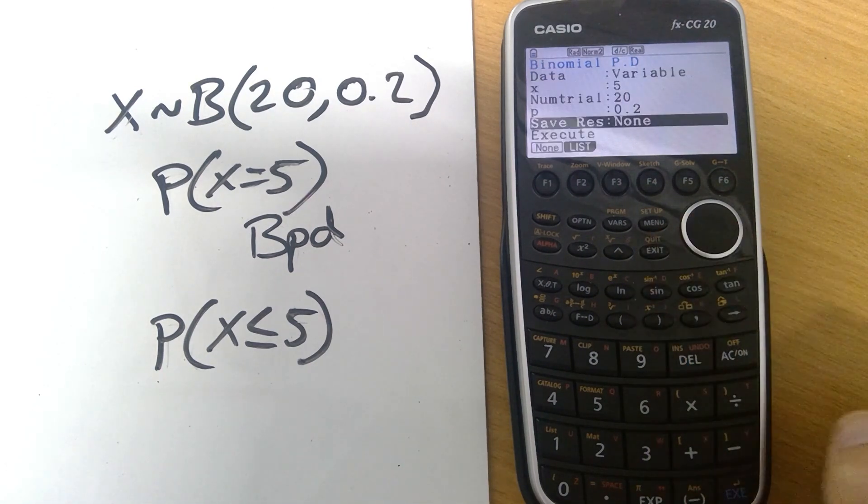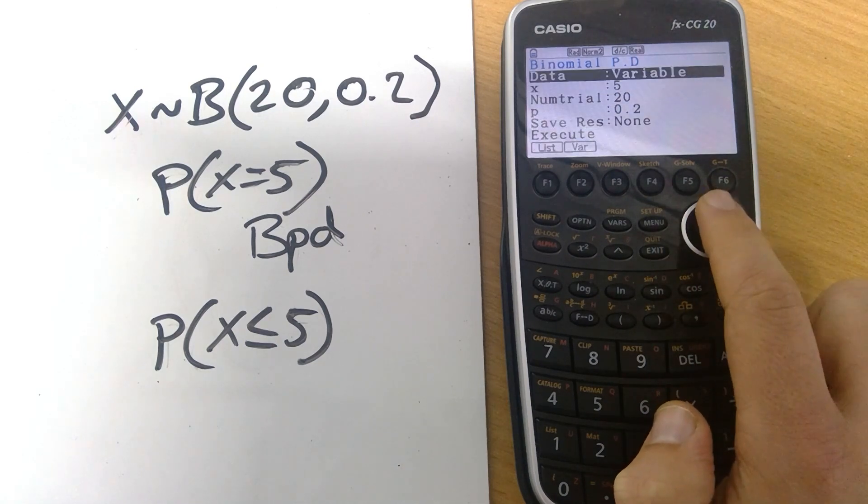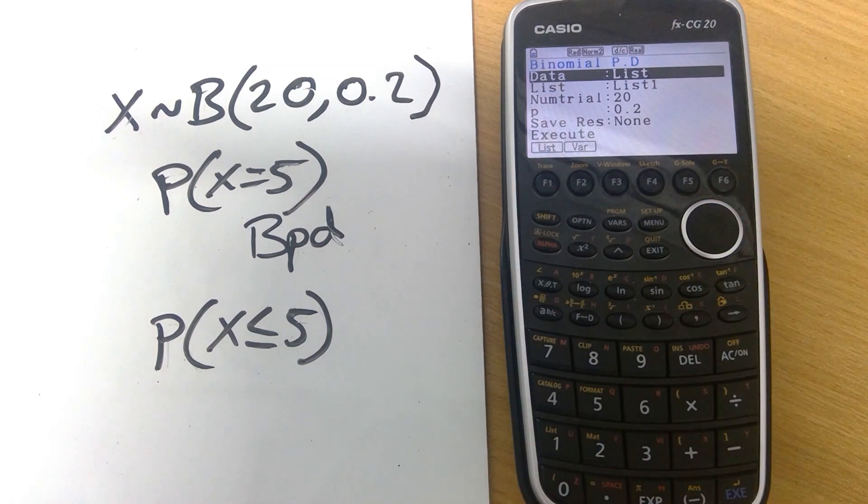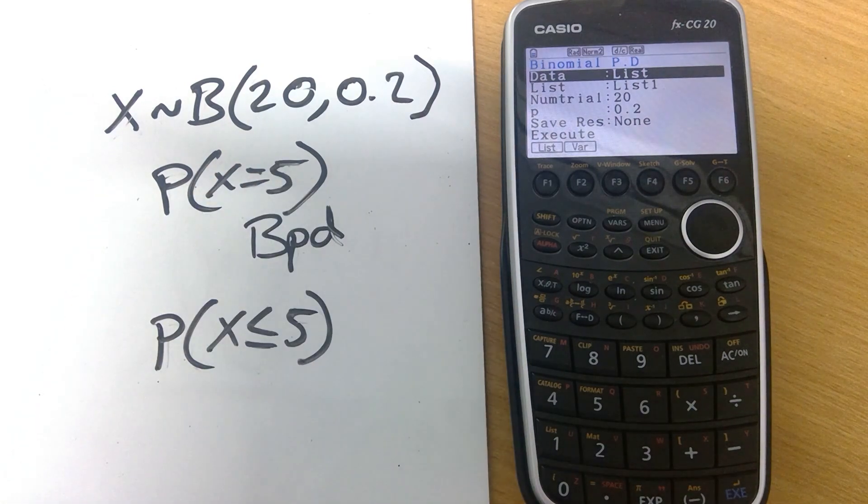Pressing exit going back out of there if we go back into list. So this is now going to be working out a series of different values. We're going to get it to calculate 0, 1, 2, 5, 10 whatever we might want it to do.